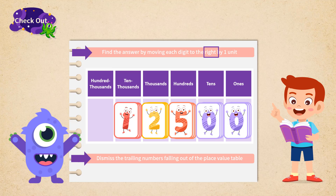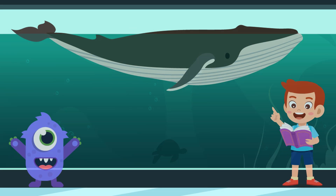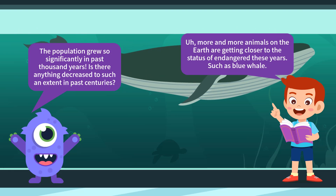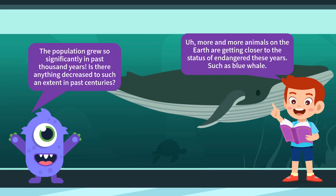So there were only 12,500 people that lived in Lumos' hometown a thousand years before. The population grew so significantly in the past thousand years. Lumos was surprised. 'Is there anything that decreased to such an extent in past centuries?' More and more animals on Earth are getting closer to the status of endangered these years, says Timmy — such as the blue whale.